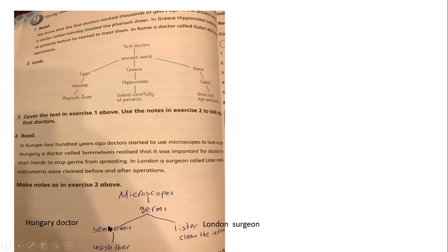In London, a surgeon Lister made sure that instruments were cleaned before and after operations. So we can put microscope as the title. After microscope we have germs. We have two doctors. For example, Semmelweis, Hungarian doctor, said wash their hands. Here we have hands. For Lister, it's a surgeon from London. Here he said, for example, clean the instrument before and after the operation.